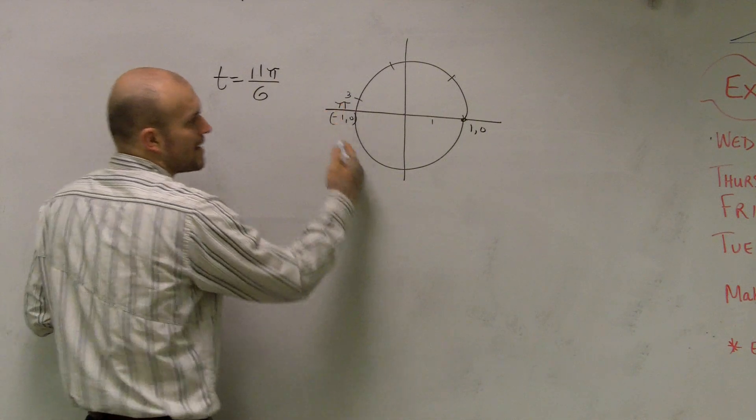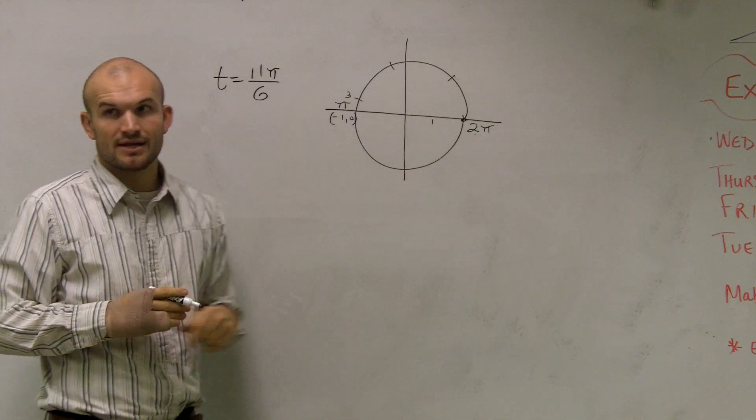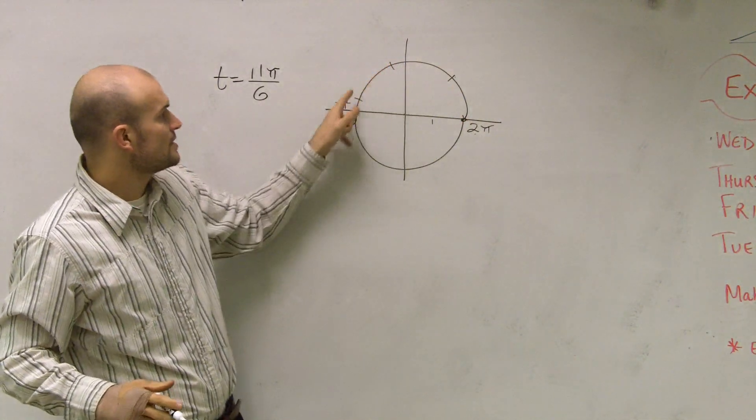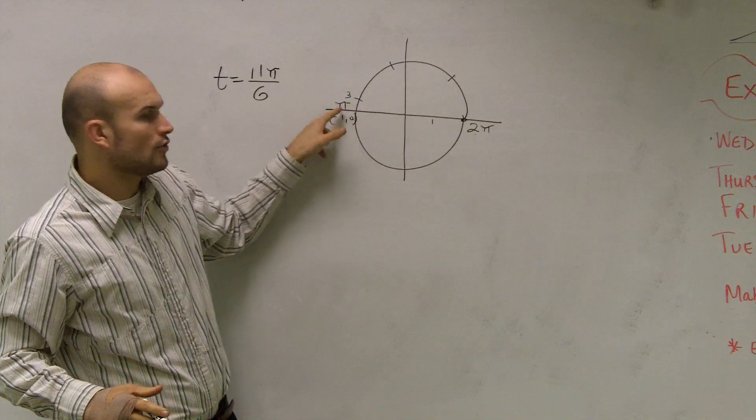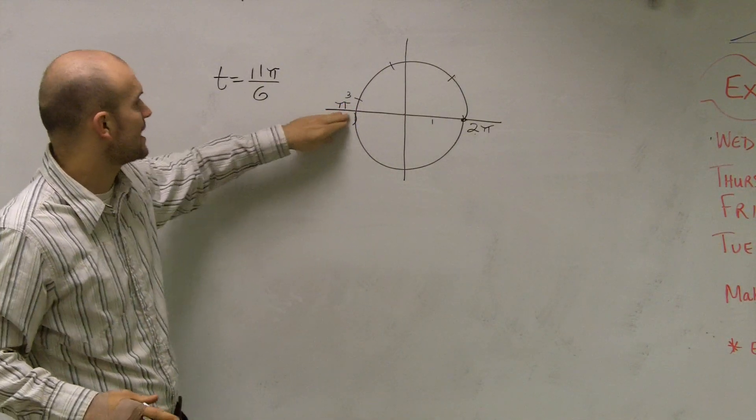And if I go around again, we're at 2π. That's 2π radians. This would be 1 radian, 2 radians, 3 radians, and then all the way around, halfway around, would be π radians.